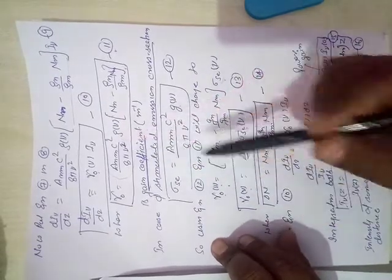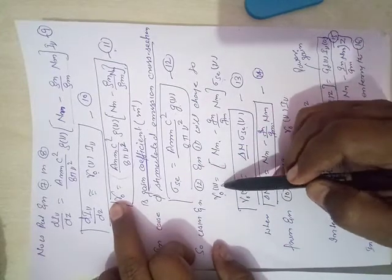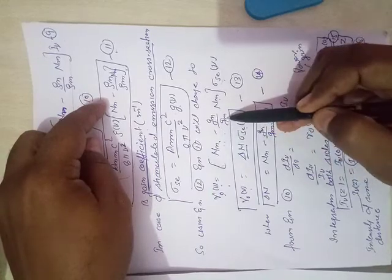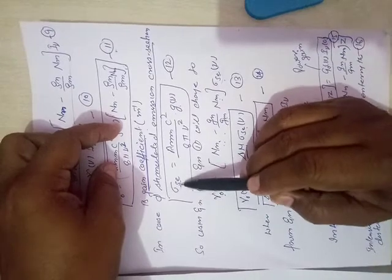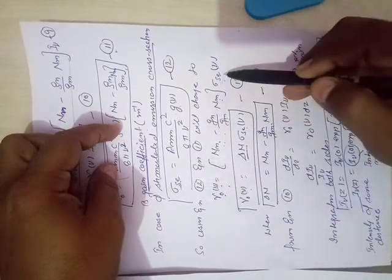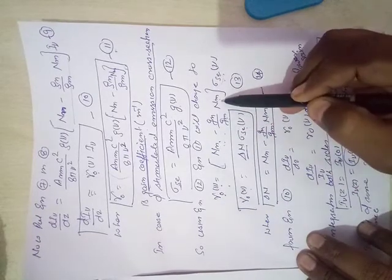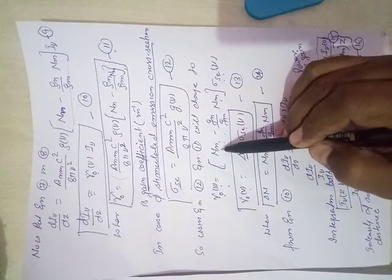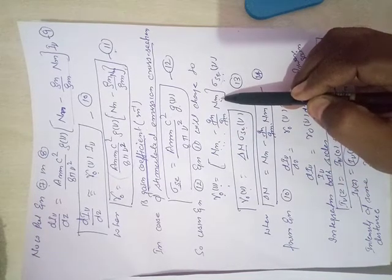By substituting equation number 12 into equation number 11, we will convert the gain into gamma naught new bracket, which is a constant. We have to replace the gain in the number of atom ions present at the excited level.